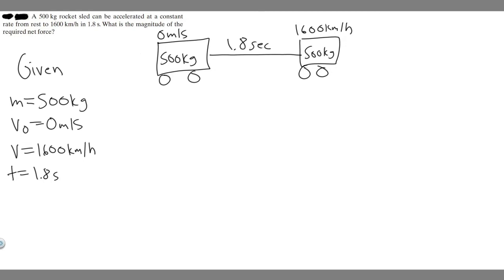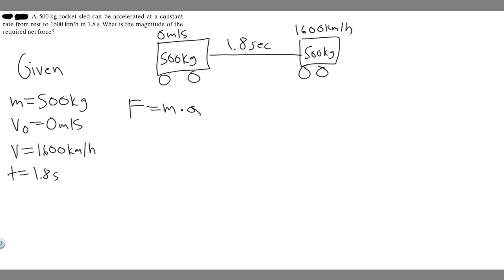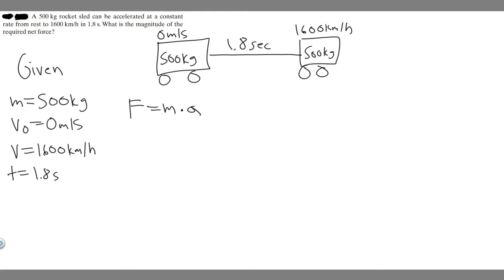We're trying to find the magnitude of the required net force. Force equals mass times acceleration. We have the mass — 500 kilograms — but we don't have the acceleration, so we'll solve for that first. Keep in mind acceleration needs to be in meters per second squared and mass in kilograms, so we need to convert 1600 kilometers per hour into meters per second.